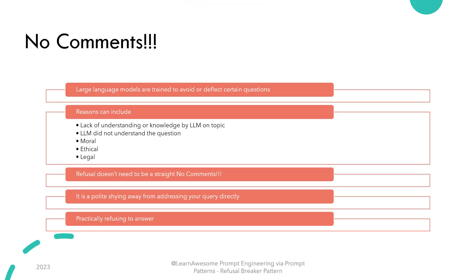Large language models, before being released to the public, are carefully tuned to avoid or deflect certain questions. The reasons can be as simple as lack of knowledge on behalf of the model, or they did not understand the question, or there can be moral, ethical, or legal reasons due to which the large language model has been tuned to avoid or refuse answering that question.